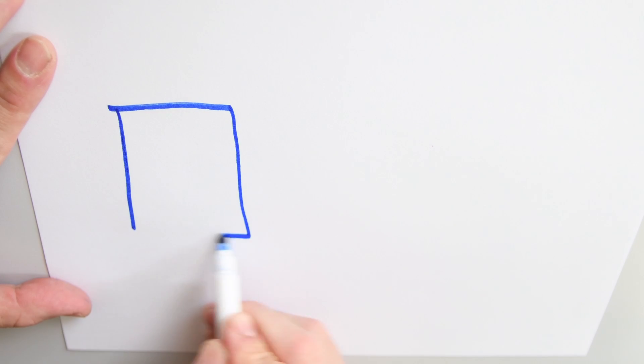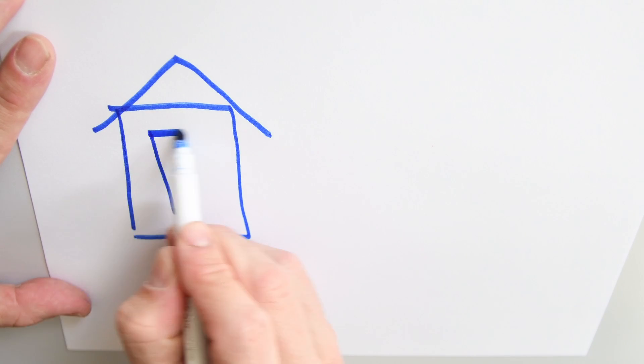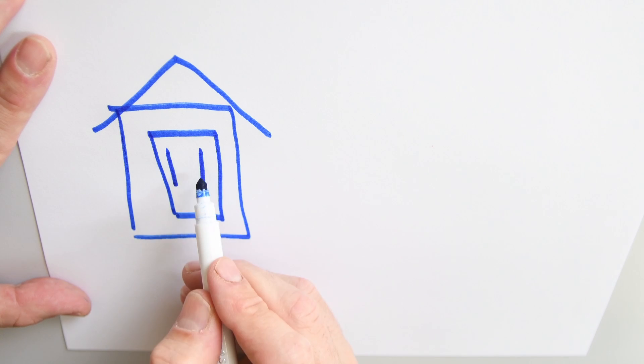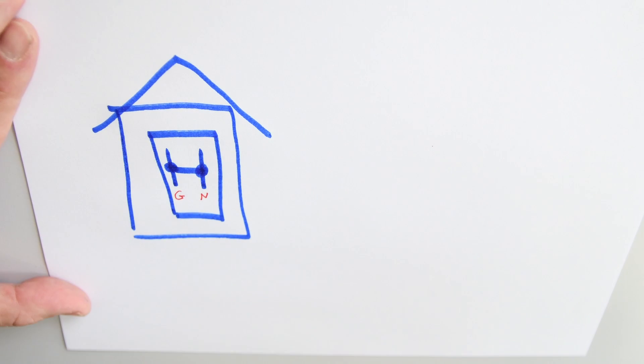Alright. So let's imagine that we have our house right here. We have our breaker panel and we just saw that the ground bar and the neutral bar, they're both connected. We're going to call this one ground and this one neutral.